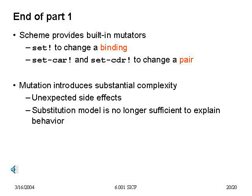To summarize: in Scheme we have built-in mutators — `set!` to change variable bindings, and `set-car!` and `set-cdr!` to change parts of a pair. Mutation introduces substantial complexity: it can lead to unexpected side effects, and it has broken our substitution model, which is no longer sufficient. We now have time inextricably intertwined into our evaluations. Things are no longer simply functional — they have to take into account context. But what we're going to see is how mutation also buys power for us.